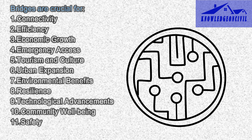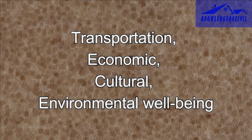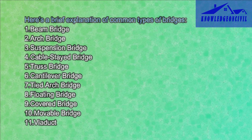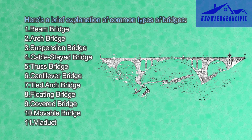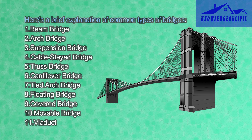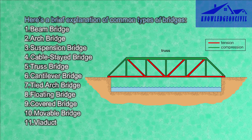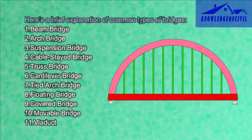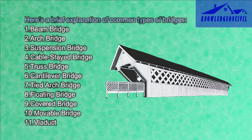Bridges pioneer technological and engineering innovations, improve community wellbeing by increasing access to essential services, and enhance safety by preventing accidents. Common types include beam, arch, suspension, cable-stayed, truss, cantilever, tied arch, floating, covered, and movable bridges, as well as viaducts. The choice depends on factors like span length, location, and function.